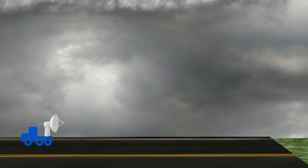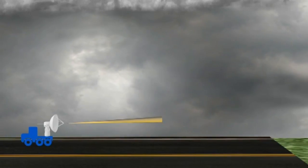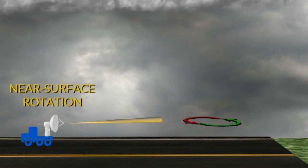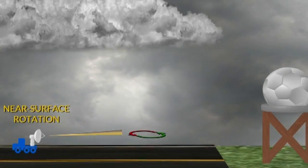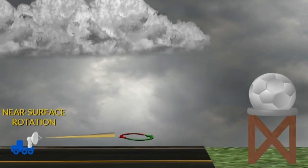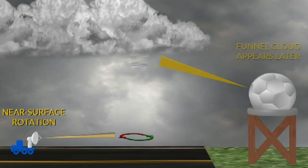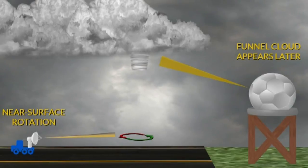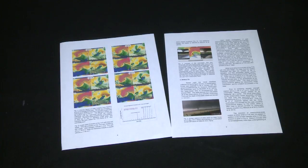Dr. Hauser used data from a radar that was placed on the back of a truck to complete this study. This allowed for low-level scans of the winds in a thunderstorm. From her data, Dr. Hauser concluded that a tornado-like vortex can be detected close to the ground, sometimes as much as a few minutes before rotation is detected in the storm by standard Doppler radar towers. She observed similar results in multiple case studies supporting the hypothesis that tornadoes form from the ground up.